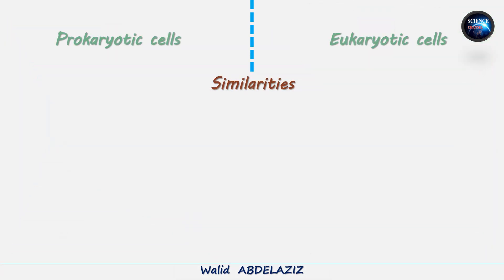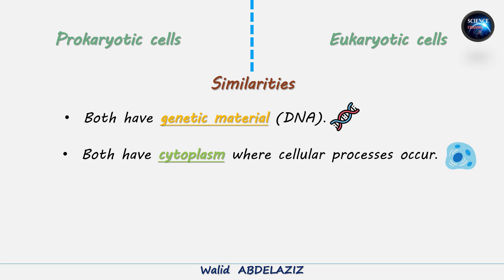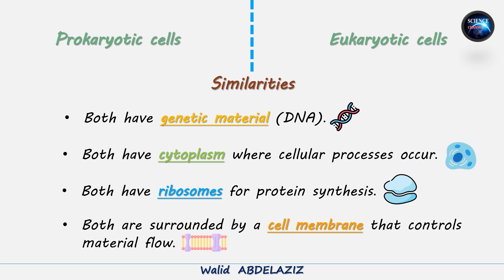Let's start by looking at what prokaryotic and eukaryotic cells have in common. Both types of cells contain genetic material in the form of DNA, which carries all the information needed for the cell's functions. Inside the cell, there is cytoplasm, which surrounds the organelles and serves as the site for most of the cell's activities. Another key feature shared by both is the presence of ribosomes — tiny structures essential for protein synthesis. Lastly, both cell types are surrounded by a cell membrane, or plasma membrane, that controls material flow in and out of the cell.